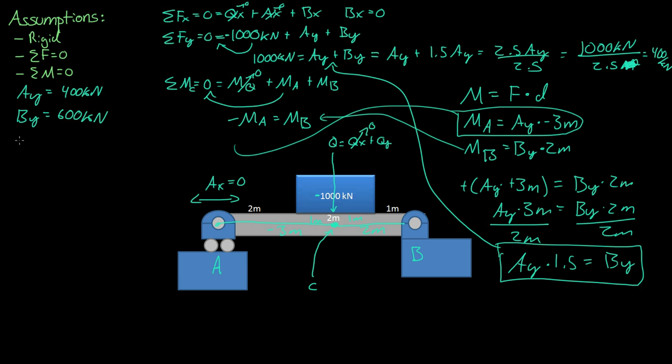So we now know what Ax is - Ax is zero, Bx is also zero, and we now know all the reactionary forces.